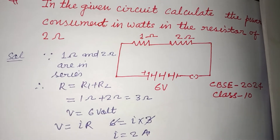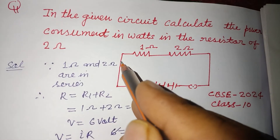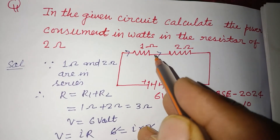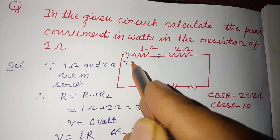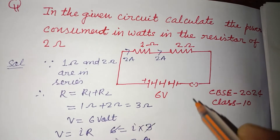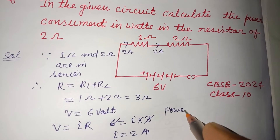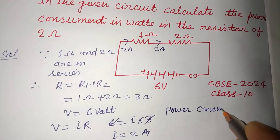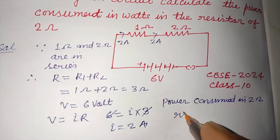In a series combination, the same current flows through each resistor, so 2 ampere flows through both resistors. Now we calculate the power consumed in the 2 ohm resistor.